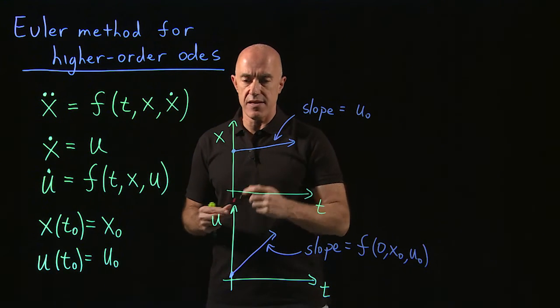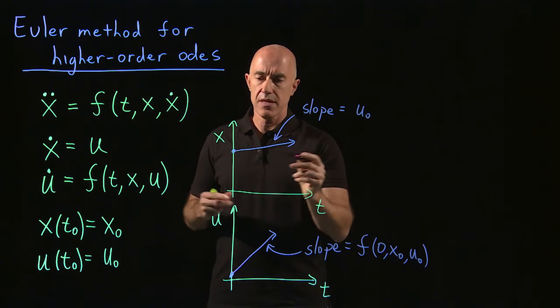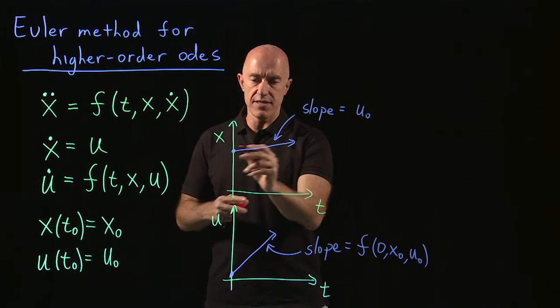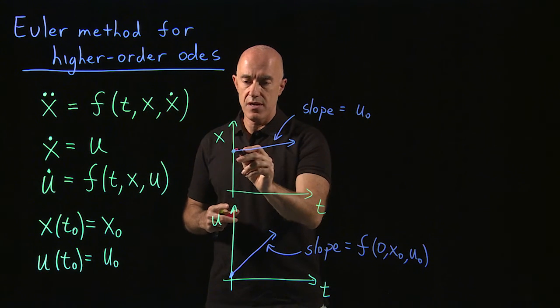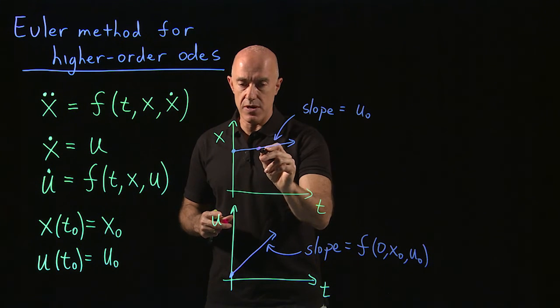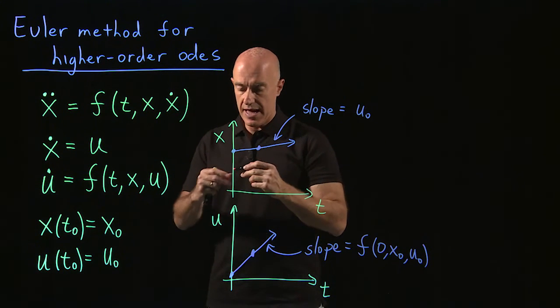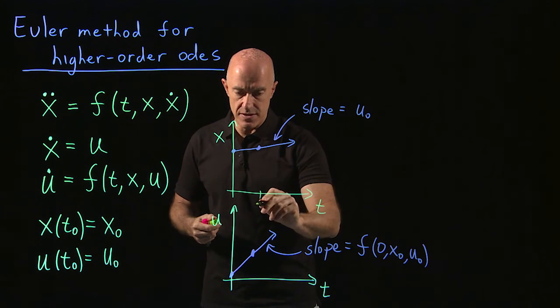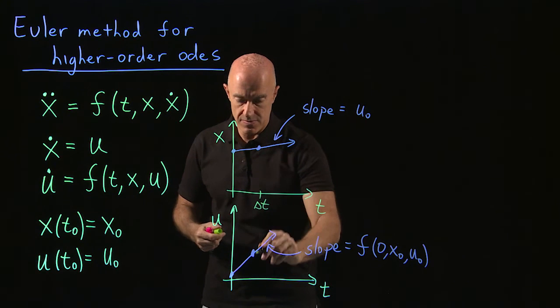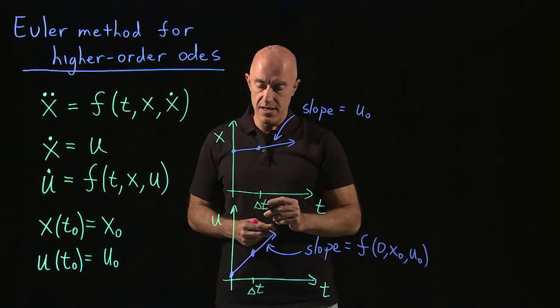Euler method says then we step along the direction of the slope, the direction of this arrow, the tangent to the solution curve. So we take a step, so we go here, we take a step, and we go here. And then this step here will be our delta t. We step the solution delta t.